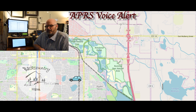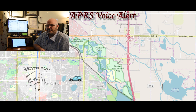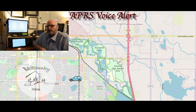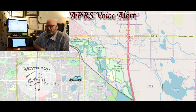The way it works is the digipeaters and i-gates are set up with essentially an open tone — they'll still receive it. Everything will still make it to APRS-FI and all the APRS tracking programs. You'll still receive everything in your station list on your radio. If you use an external tablet connected through your radio, all the packet beacons will still show up on there. Your radio simply won't make any sound.